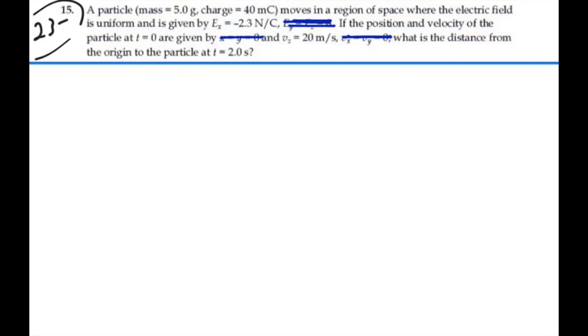Hence, we have an E field in the negative x direction, a velocity in the z direction, and we have a particle with 5 grams mass and 40 mC charge. We want to find its distance from the origin at t = 2 seconds.